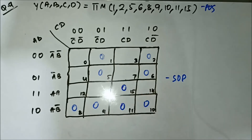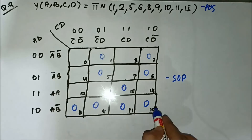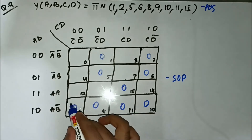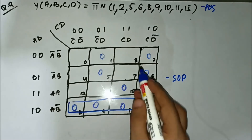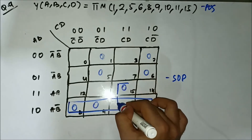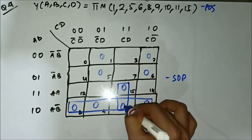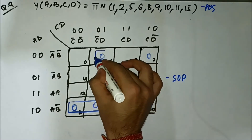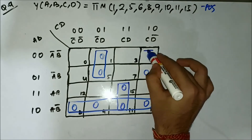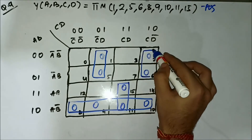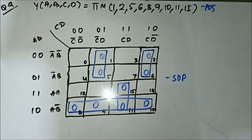So we map: 1, 2, 5, 6, 8, 9, 10, 11, 15. Now we'll form the groups. These four cells can be grouped together to form a quad. These two can be grouped together to form a pair, again these two form a pair, and these two again form a pair. All the grouping is done.